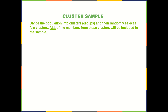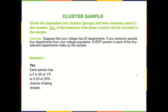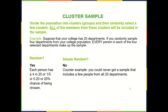Now let's talk about a cluster sample. You divide the population into clusters or groups, then randomly select a few clusters. All of the members from those selected clusters will be included in the sample. For example, suppose your college has 20 departments. If you randomly sample four departments, every person in each of the four selected departments makes up the sample. Is this random? Yes — each person has a 4 in 20 chance of being chosen, since each person is only assigned to one department and four of those departments will be chosen. Is it simple random? No — a counter-example: you could never get a sample that includes a few people from all 20 departments.